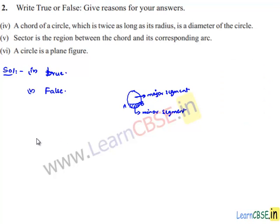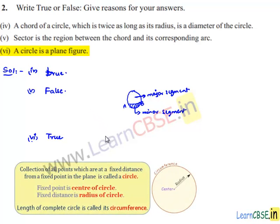Moving on to the sixth bit: a circle is a plane figure. That is true, because by the definition of a circle — a collection of all points in a plane which are at a fixed distance from a fixed point in a plane — a circle is indeed a plane figure.